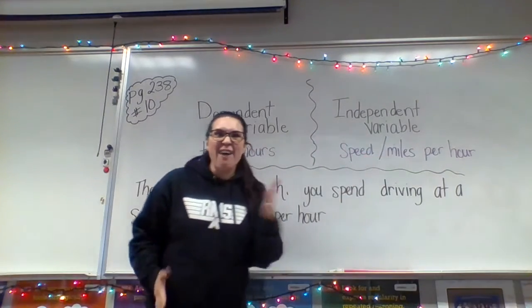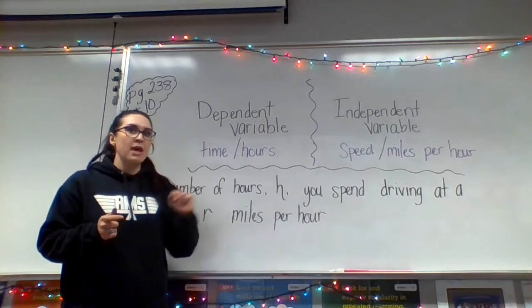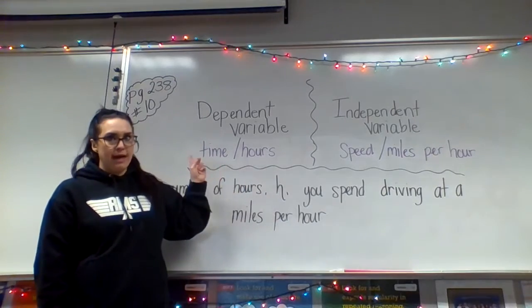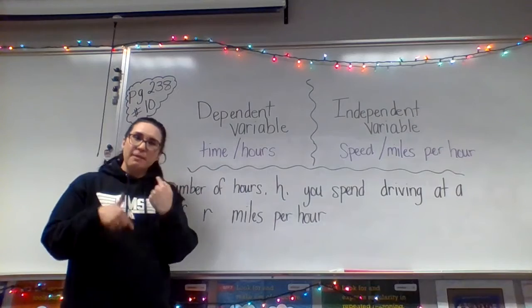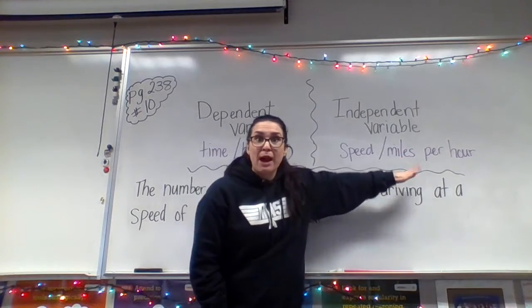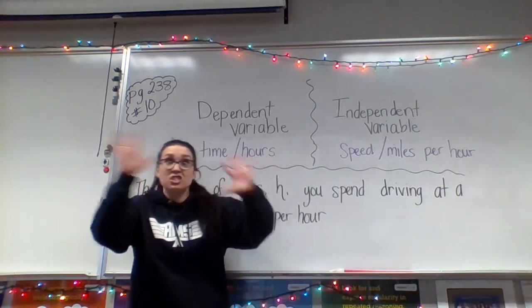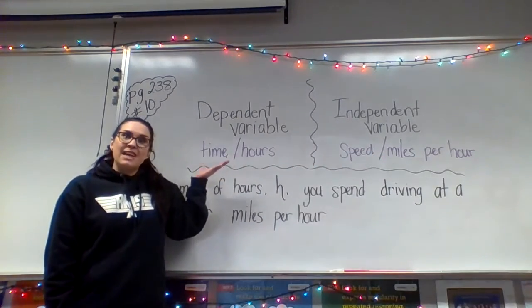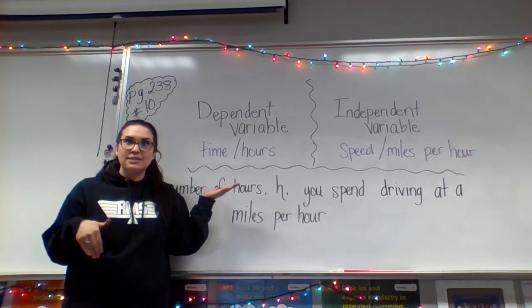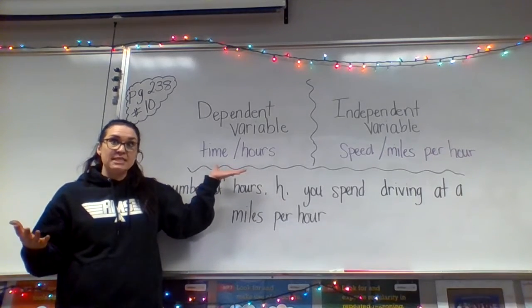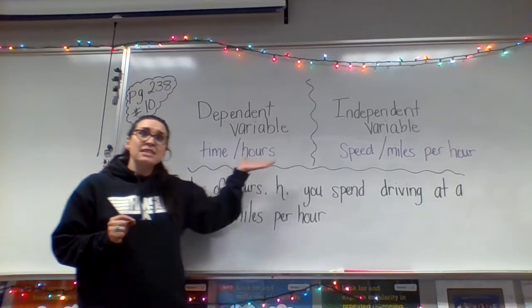Our speed — how fast we're driving — determines how long we have to spend in the car. We have to go 500 miles. If we're going only one mile per hour, that time is going to be ginormous. On the flip side, if you're going 100 miles per hour — which is illegal and way too fast — if you're going super fast, the amount of time you spend in your vehicle goes down. So the dependent variable is the amount of time your road trip takes, because it depends on how fast you're driving.